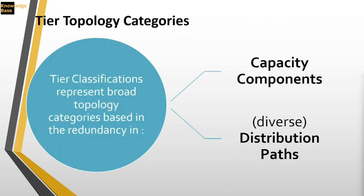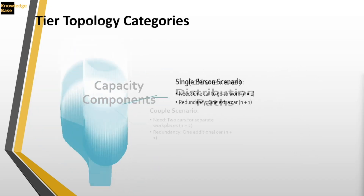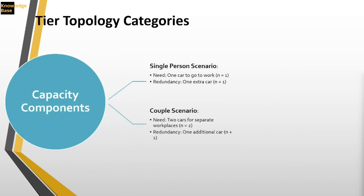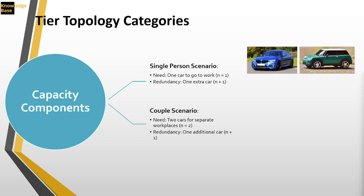To classify a tier level, we look at two topology categories: the capacity component and the diversity of distribution path. The capacity component means the load that can be handled by a data center. As an analogy: a single person needs one car to go to work every day — that's his need, N equals one car.